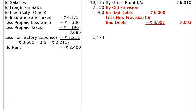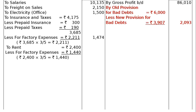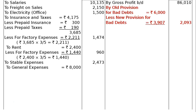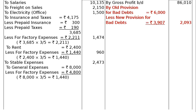Then to rent Rs. 2,400. Next, to general expenses Rs. 8,000, less factory portion (3/5) Rs. 4,800, leaving the office portion (2/5) shown in the final column as Rs. 3,200. Note: an earlier figure of Rs. 14,440 was a mistake; the correct factory portion is Rs. 4,800.